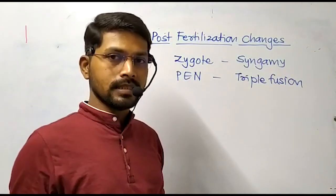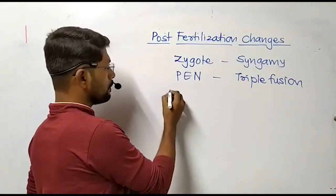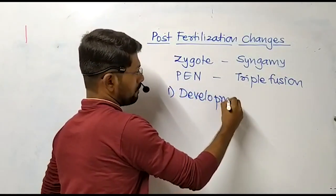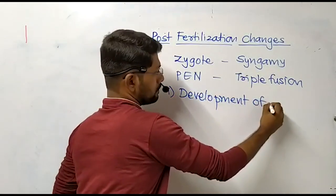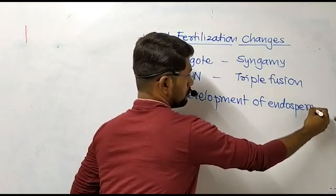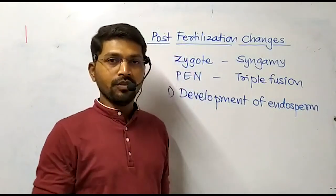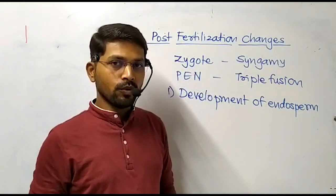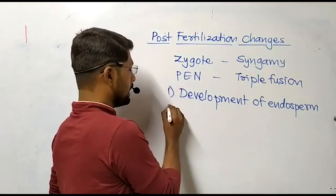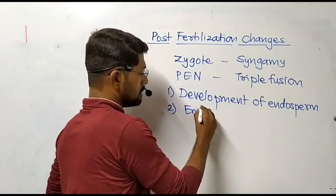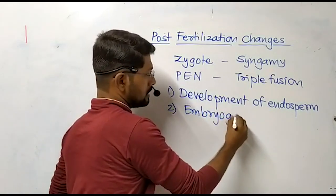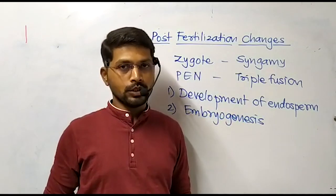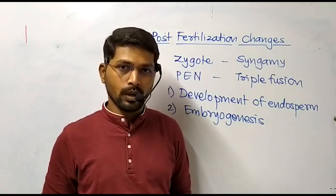The steps we are going to discuss in this lecture are development of endosperm. We are going to study this step first because this is a nutritive tissue and it is produced well before embryo formation. The second step we are going to discuss is embryogenesis, which is nothing but development of embryo in angiosperms. Let us discuss these steps one by one.